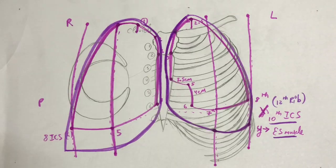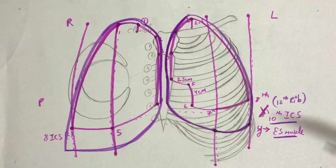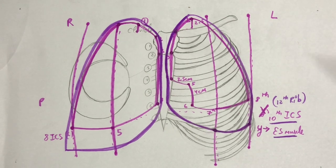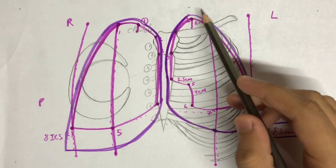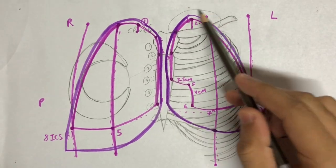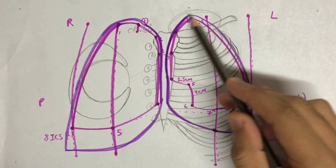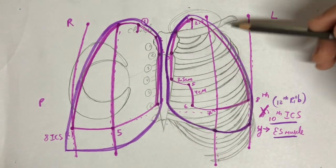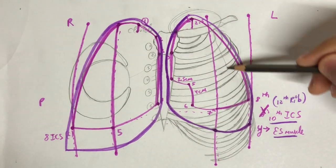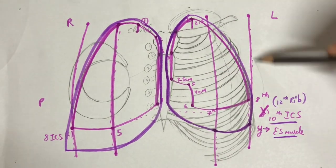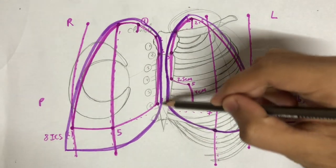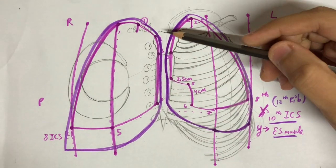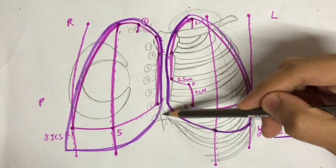Coming back to the parietal pleura, it can be divided into four types based on location: the cervical pleura, the costal pleura, the diaphragmatic pleura, and the mediastinal pleura.